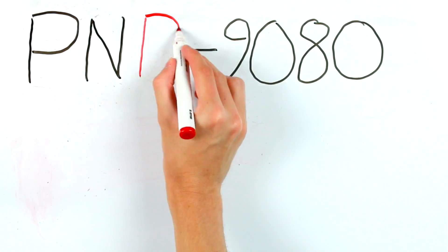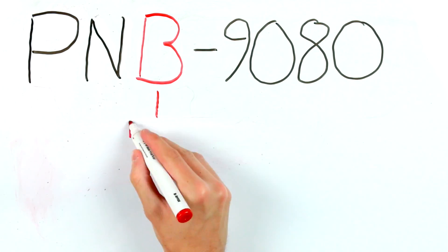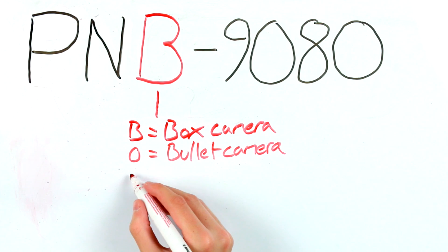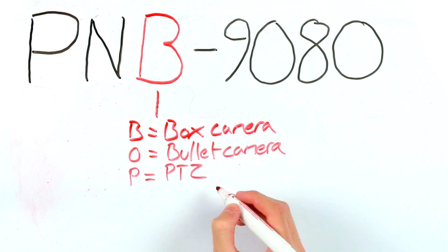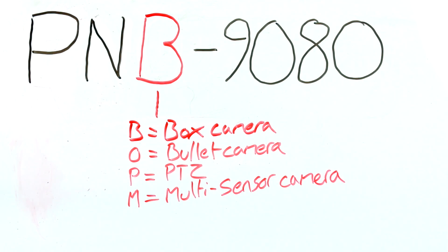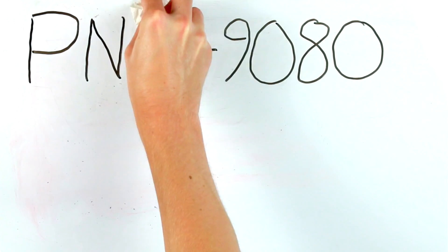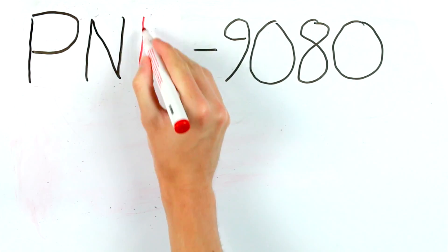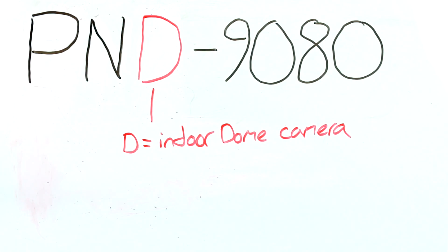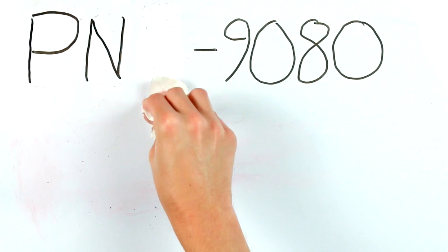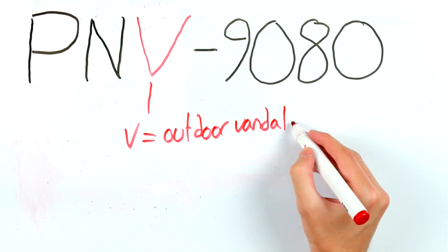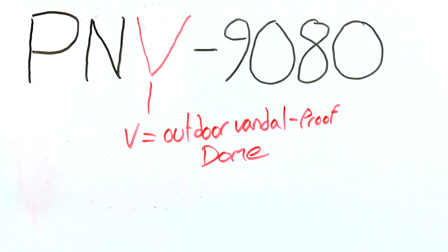The third letter defines the style of camera. For example, B stands for box camera, O stands for bullet camera, P stands for PTZ, and M stands for multi-sensor, and so on. When it comes to dome cameras you will have one of two letters: if it's an indoor-only dome the third letter will be a D, and if it's an outdoor vandal-proof dome then the letter will be a V.